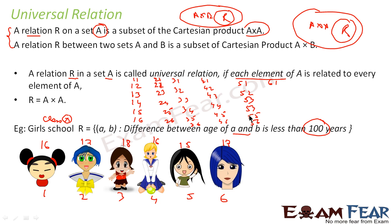Continuing, with girl 6 we get pairings (6,1), (6,2), (6,3), (6,4), (6,5), (6,6). This complete set of pairs is nothing but A cross A, and if you check, all these values satisfy the condition.